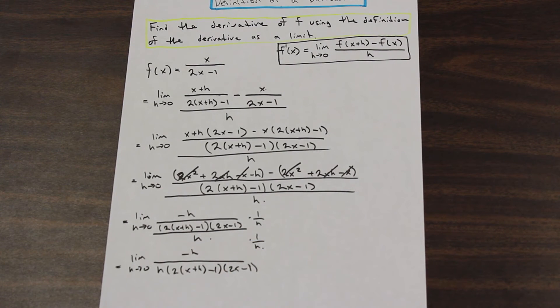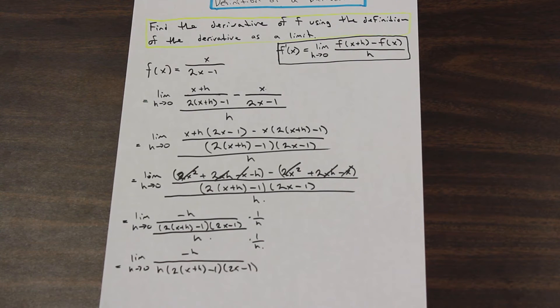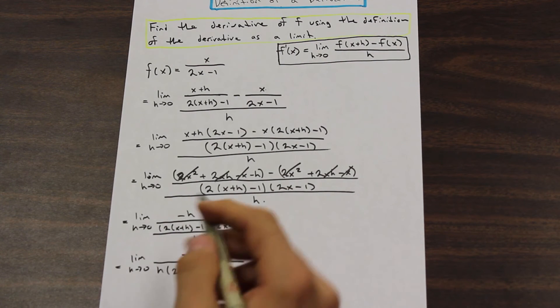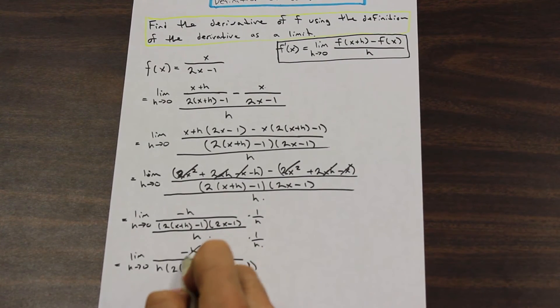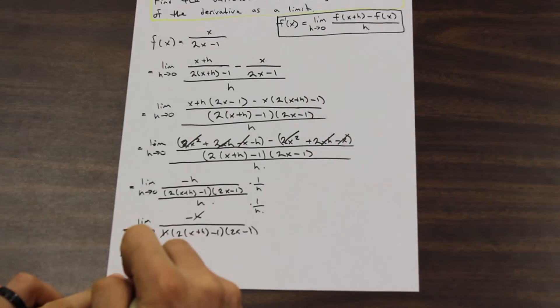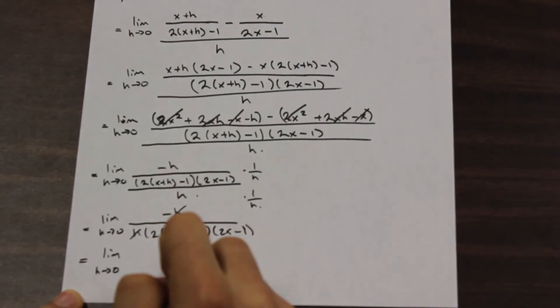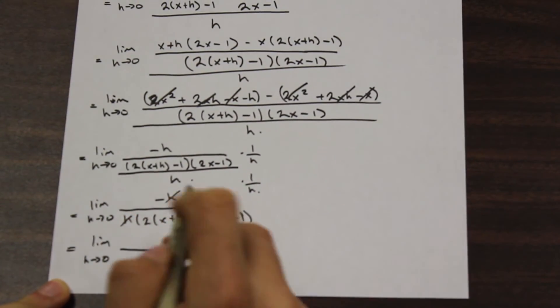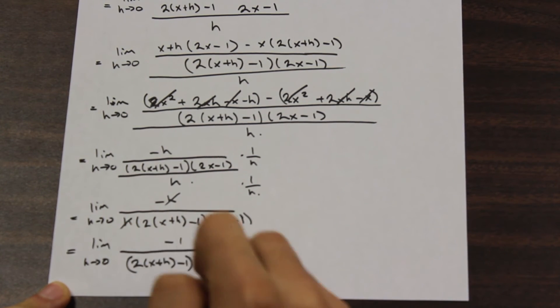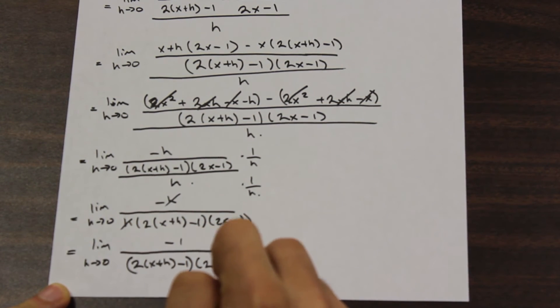Now this is looking like something that we can start to cancel and really work with. If we remember from the limits before, we needed to get it into a form where we could plug in the limit or apply the limit and we would get a defined function. And now this looks like something that we're arriving at, we're working towards, because we have h's here that are canceling. And if we continue along, we're going to end up with negative 1 over (2x+h-1)(2x-1).